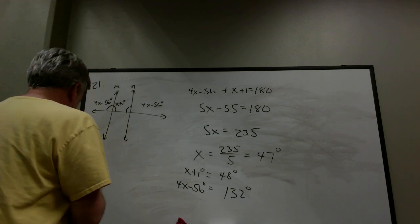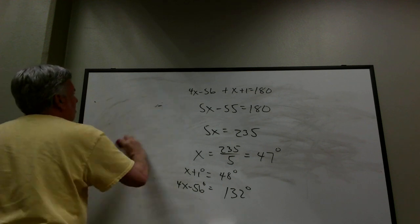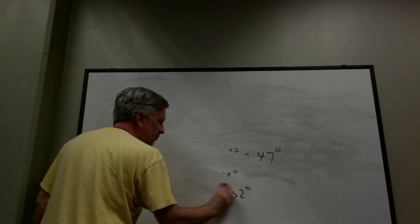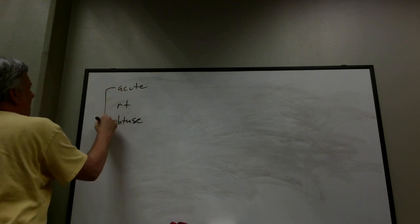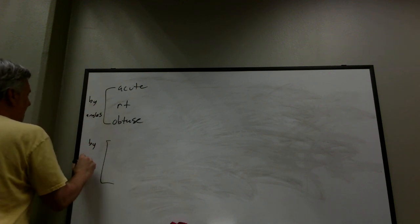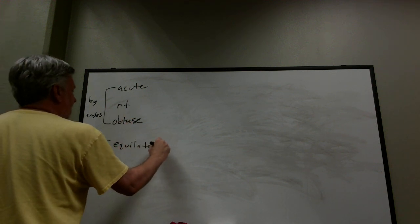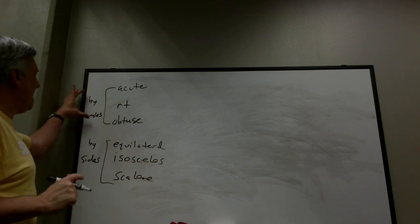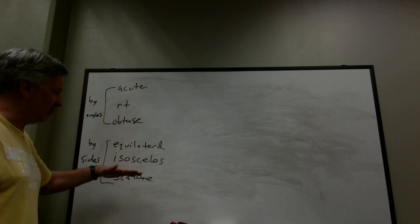Now we'll classify triangles in two ways. First, by angles: acute (all angles acute), right (exactly one right angle), and obtuse (exactly one obtuse angle). Second, by sides: equilateral, isosceles, and scalene. We'll mix and match these shortly.